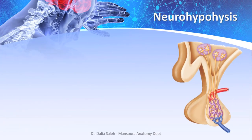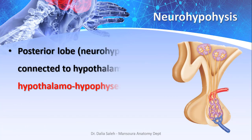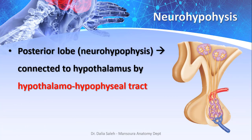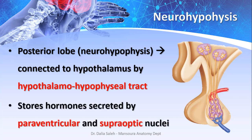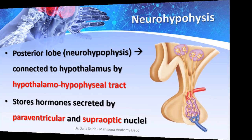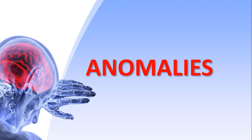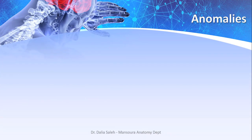The neurohypophysis — the posterior lobe — is connected to the hypothalamus through the hypothalamo-hypophysial tract. The cells there do not secrete hormones; they only store hormones secreted by the paraventricular and the supra-optic nuclei of the hypothalamus, which secrete ADH and oxytocin.